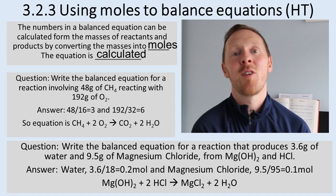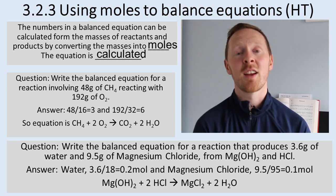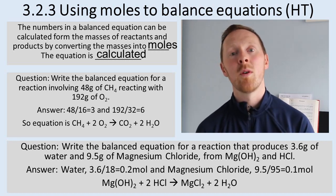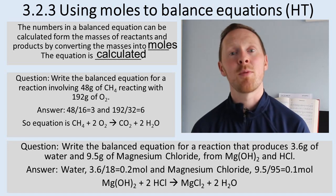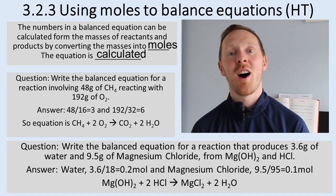Methane has a relative formula mass of 16: carbon is 12, hydrogen is 1 but there's four hydrogens. So first thing you do is work out the moles of methane. 48 divided by 16 is 3. You've got 3 moles of methane.